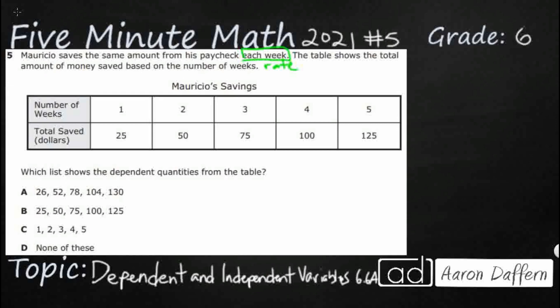Which list shows the dependent quantities? All right, so now we've got to find the dependent, not the independent. So, what is the difference? Well, we've been looking at tables like this all the way back since second grade and third grade.